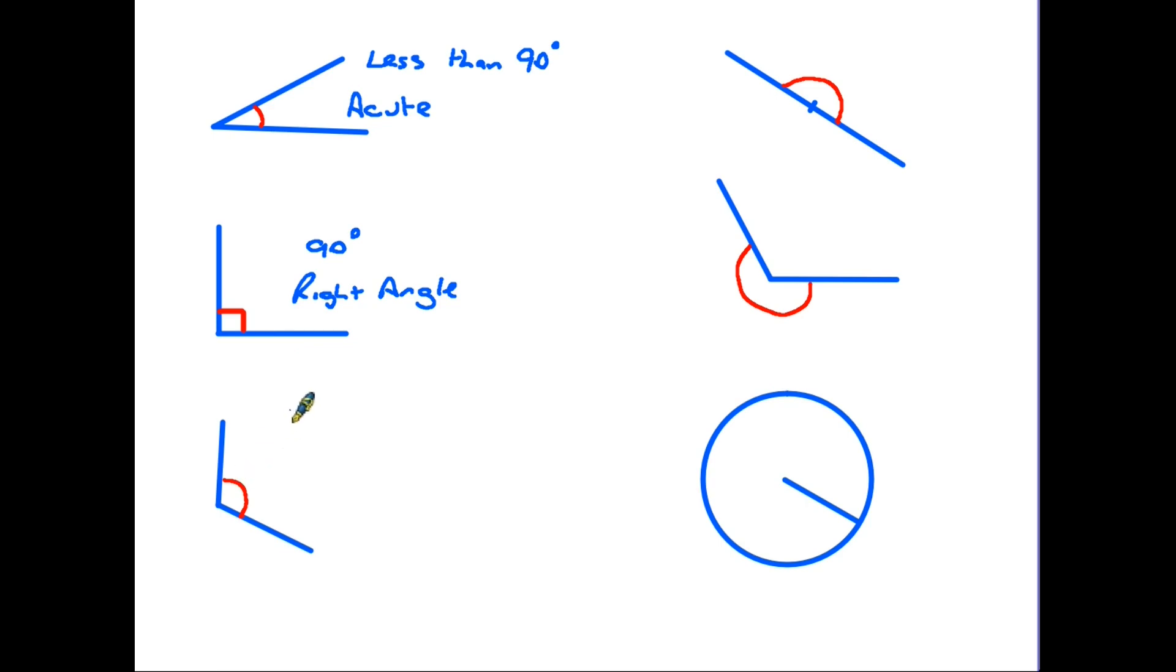Below that we're going slightly larger again. Now this angle has two rules: first of all it is larger than 90 degrees, so bigger than a right angle, but it is smaller than 180 degrees. This we call an obtuse angle.